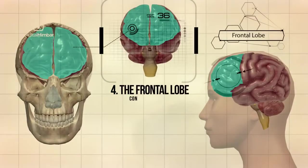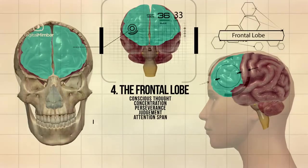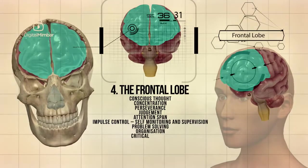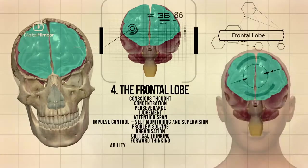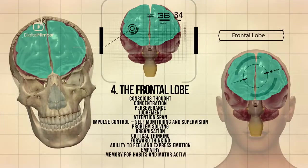And then there's the frontal lobe, which is responsible for conscious thoughts, concentration, perseverance, judgment, attention span, impulse control which is self-monitoring and supervision, problem solving, organization, critical thinking, forward thinking, ability to feel and express emotion, empathy, and memory for habits and motor activities.